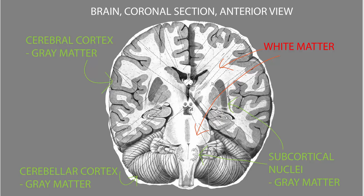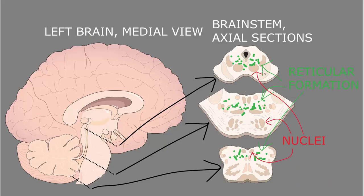The white matter of the central nervous system contains lots of myelinated axons. Bundles of axons in the central nervous system are called tracts, and the axons in a tract usually carry similar types of information. In addition to neurons carrying motor, sensory, or autonomic information, the central nervous system also contains many interneurons involved in either lower or higher neuronal functions — interneurons that connect other neurons together within the central nervous system.